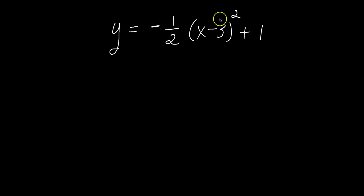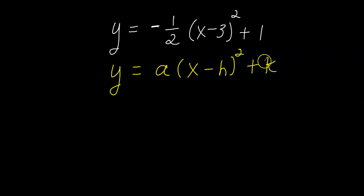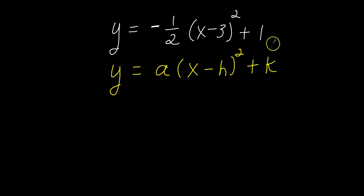In this video, I'm going to show you how to sketch the graph that goes with this equation. The first thing I do is check to see that it's written in graphing form — this equation is. Graphing form, also called vertex form, looks like this: y equals a times x minus h squared plus k. It's written where you have some number multiplied by the x stuff squared plus another number.